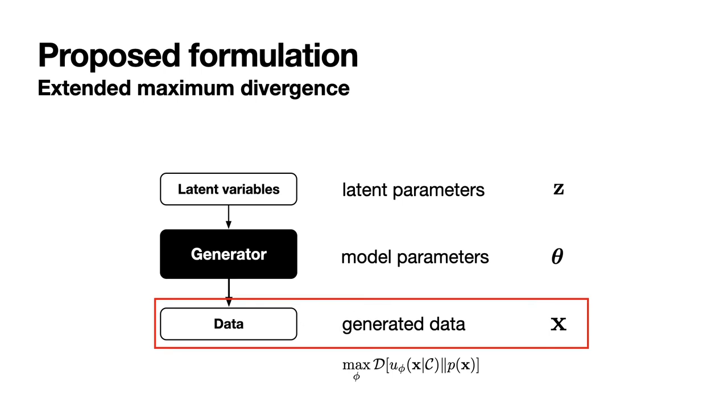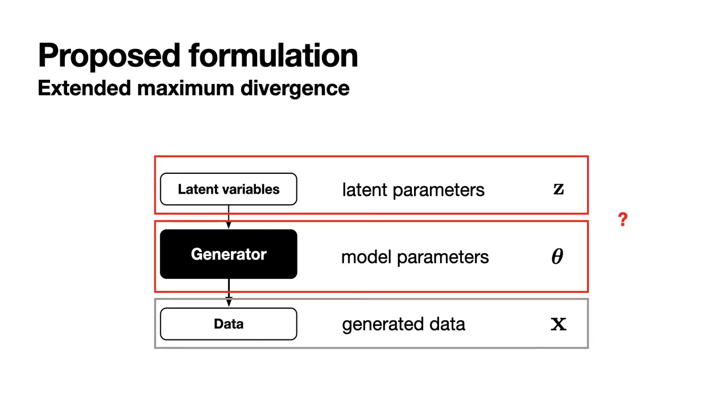Finally, we can also extend our maximum divergence objective to other parts of the model. As we exposed earlier, most generative models can be split in three different variables: the generated data x, the condition variable z, here we will just keep the latent variables, and the model parameters theta. Can we gain by extending maximum divergence to latent and model parameters? To be able to extend this criterion, we will assume the data distribution as either the underlying distribution of an existing dataset or the generative distribution of a pre-trained model.